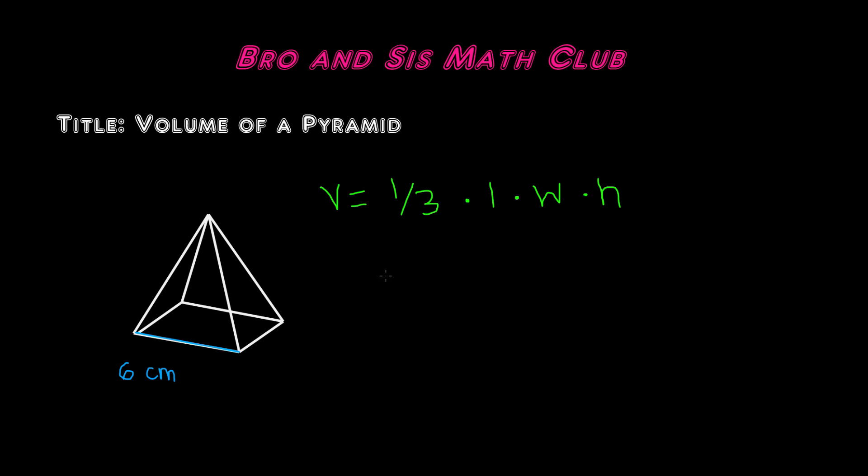So we have the length. Next we have to find the width. The width is how wide the base of the pyramid is. So we need to find the width of this rectangle. The width will be over here, and let's say that the width is 3 centimeters.